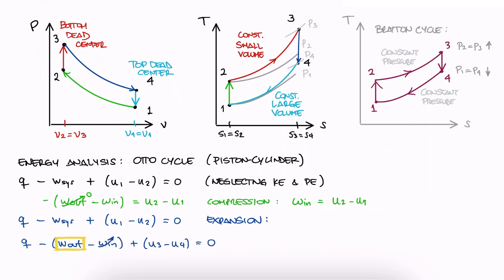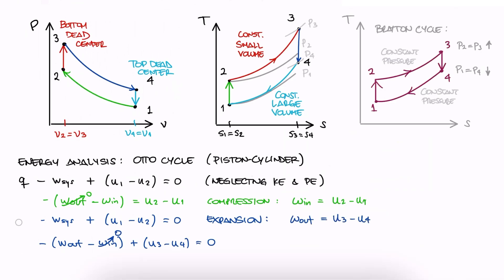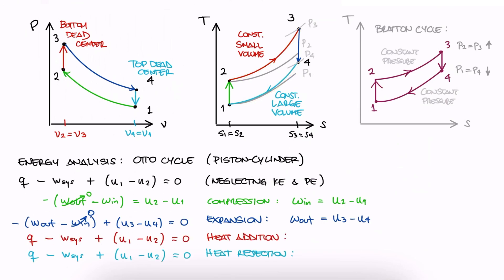The work produced by the fluid in this adiabatic process going from 3 to 4 is equal to its change in internal energy. And as for the heat addition and rejection processes, these happen with no work being added or removed, and also at a constant volume, which makes sense we would also use internal energy.